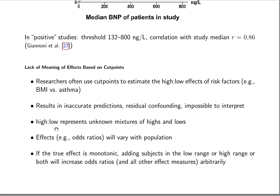That's because the high to low ratio represents an unknown mixture of highs and lows, and the effects, such as odds ratios, will vary with the population. If the true effect is monotonic, adding subjects in the low range or the high range, or both, will increase the odds ratio.